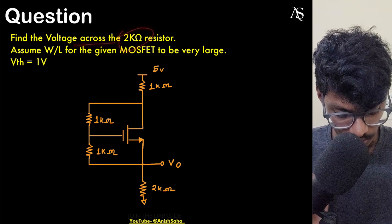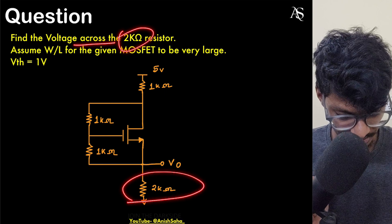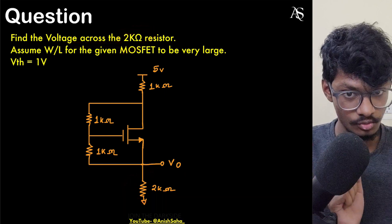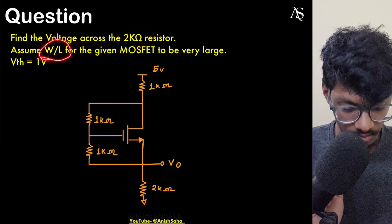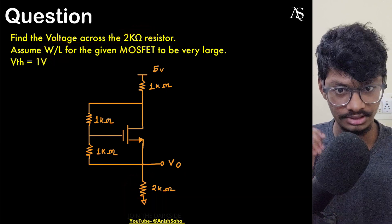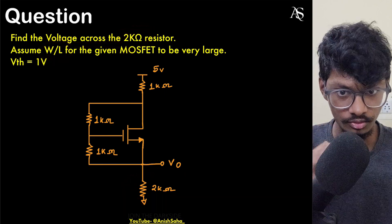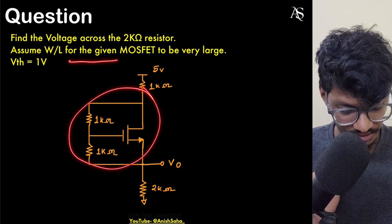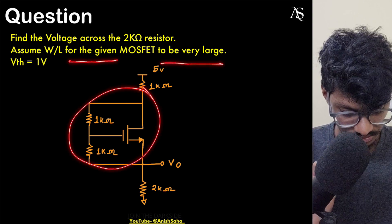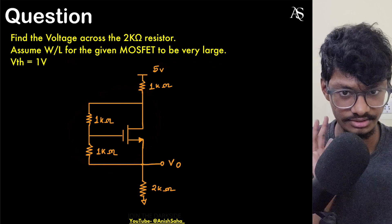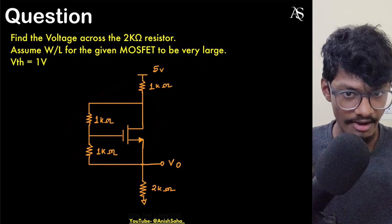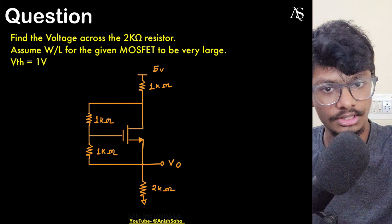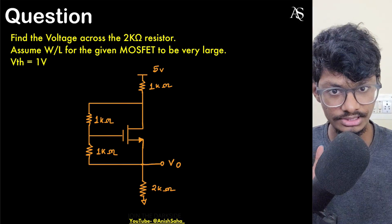They have asked us to find the voltage across the 2 kilo-ohm resistor. Assume that W/L, the width-to-length ratio for the given MOSFET, is very large, and Vth is 1 volt. They haven't given us any other information — just that.